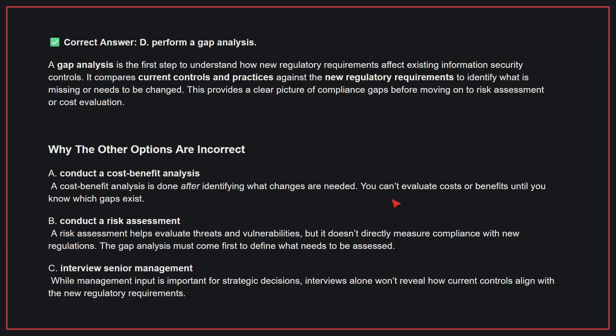Why are the other options incorrect? A: Conduct a cost-benefit analysis — this is done after identifying what changes are needed; you can't evaluate costs or benefits until you know which gaps exist. B: Conduct a risk assessment — a risk assessment helps evaluate threats and vulnerabilities but doesn't directly measure compliance with new regulations; the gap analysis must come first. C: Interview senior management — while management input is important, interviews alone won't reveal how current controls align with the new regulatory requirements. Therefore, the correct answer is D.